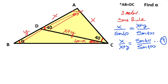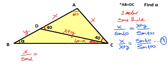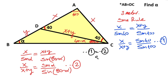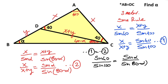Now focusing on the largest triangle, we can also apply the sine rule: x over sine alpha equals x plus y over sine (80 minus alpha). Therefore x over x plus y equals sine alpha over sine (80 minus alpha). This is the second equation. Equalizing the first and second equations, since both equal x over x plus y: sine 40 over sine 100 equals sine alpha over sine (80 minus alpha).